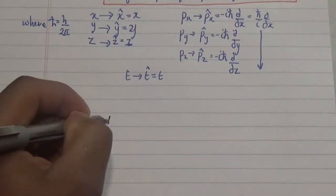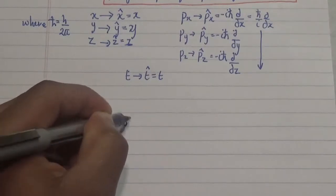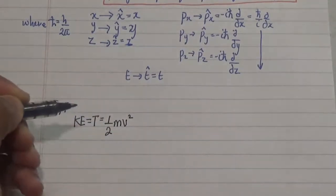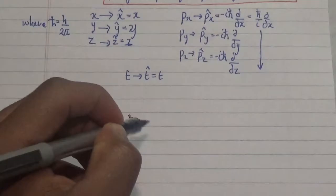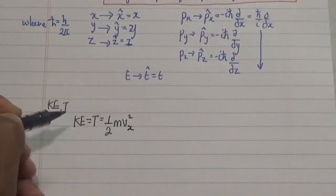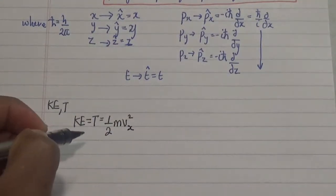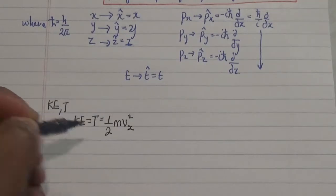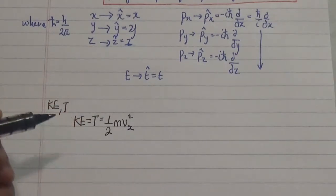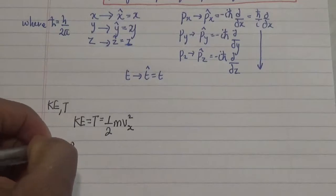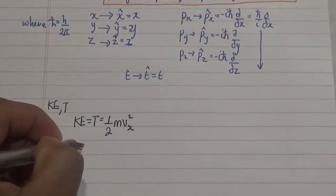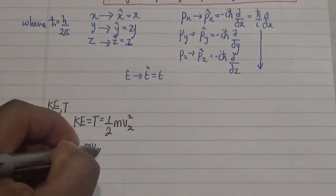Now looking at this in just one coordinate which is in the x dimension, since we know that momentum classically is expressed as mv in the x coordinate.